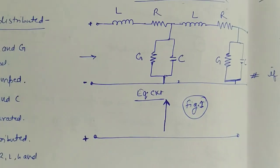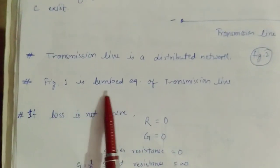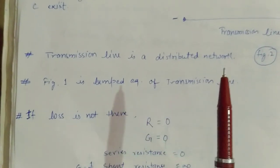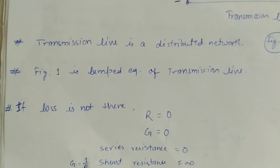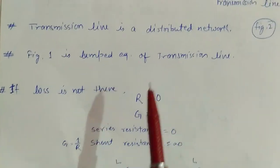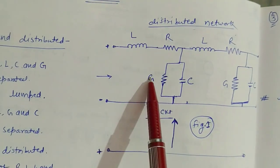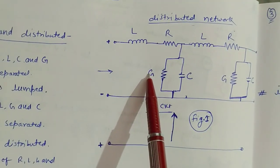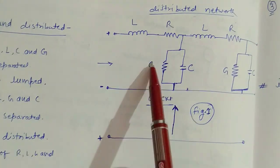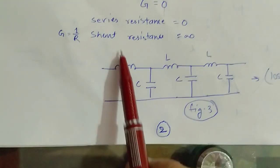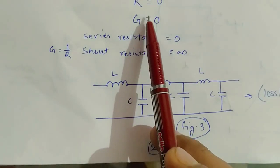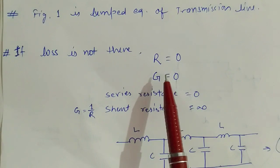This is the equivalent circuit. Transmission line is a distributed network. Components are lumped, but they are distributed across the transmission line. Another case: if loss is not there, meaning in the transmission line R and G can be ignored if loss is minimal or almost negligible. If these two are zero, then the transmission line is drawn as a combination of only L and C. This type of transmission line is called a lossless transmission line.